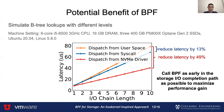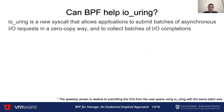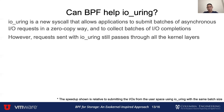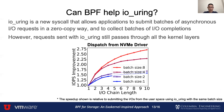Our observation is that calling the BPF function as early in the storage IO completion path as possible can maximize the performance gain. Another interesting question is: can BPF help io_uring? io_uring is a new syscall that allows applications to submit batches of asynchronous IO requests in a zero-copy way and to collect batches of IO completions. It is a more optimized IO syscall compared to read. However, requests sent with io_uring do pass through all the kernel layers. Therefore, by reducing the number of kernel layers each request needs to traverse, we can achieve higher IO speedup by reissuing new requests in the NVMe driver. This graph shows the speedup with different batch sizes and B-tree depths. The maximum speedup we can achieve is 2.7. Even for a three-level B-tree, we can get IO speedup around 1.3 to 1.9.